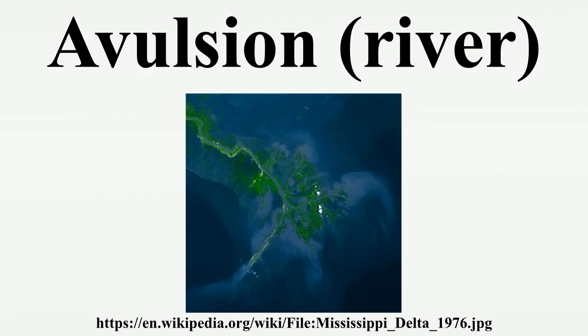Rivers can also avulse due to the erosion of a new channel that creates a straighter path through the landscape. This can happen during large floods in situations in which the slope of the new channel is significantly greater than that of the old channel. Where the new channel's slope is about the same as the old channel's slope, a partial avulsion will occur in which both channels are occupied by flow.